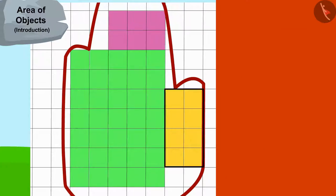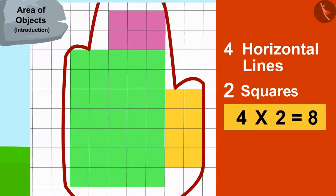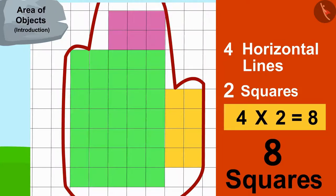And this third rectangle has four horizontal lines and every line has two squares. It means there are four times two or eight squares in this rectangle.